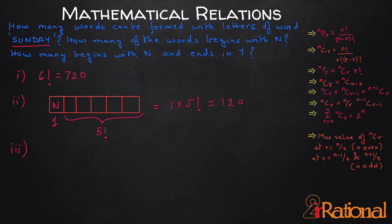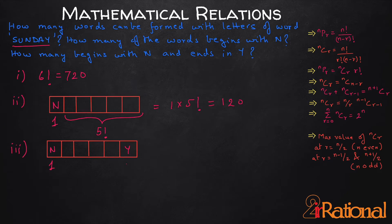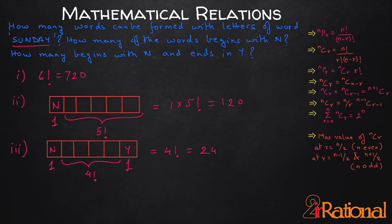For the last sub-question, how many words begin with N and end in Y? We get our 6 boxes again. We fix the first letter as N and the last letter as Y, giving only one option each for those positions. The middle 4 positions can be filled with any of the 4 remaining letters, giving 4 factorial ways. Total number of ways = 4 factorial = 24 ways. This is a typical question involving restriction in permutations.